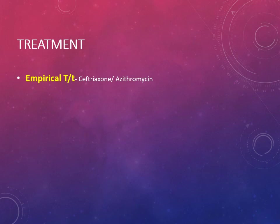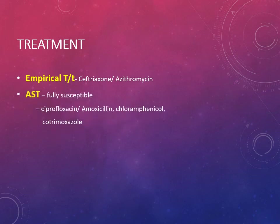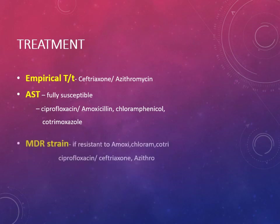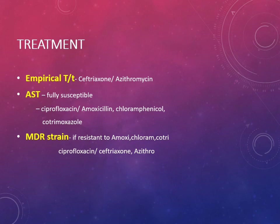For treatment, empirical treatment - given before reports arrive - is ceftriaxone or alternatively azithromycin. Once results are available: if fully susceptible, give ciprofloxacin, or alternatively amoxicillin, chloramphenicol, or cotrimoxazole. For MDR strains resistant to amoxicillin, chloramphenicol, and cotrimoxazole, give ciprofloxacin, ceftriaxone, or azithromycin. For nalidixic acid-resistant strains, give ceftriaxone or azithromycin.